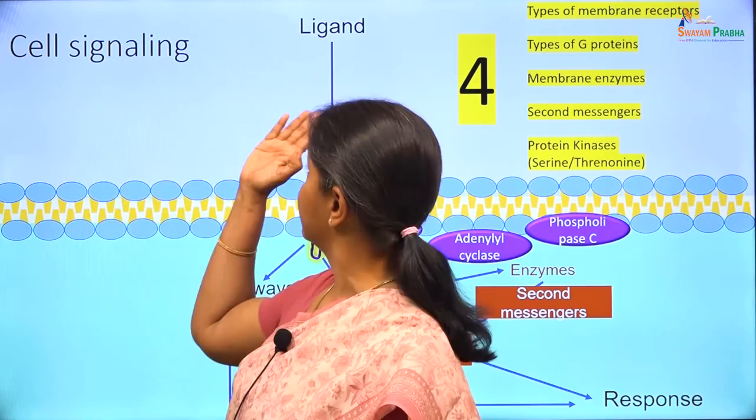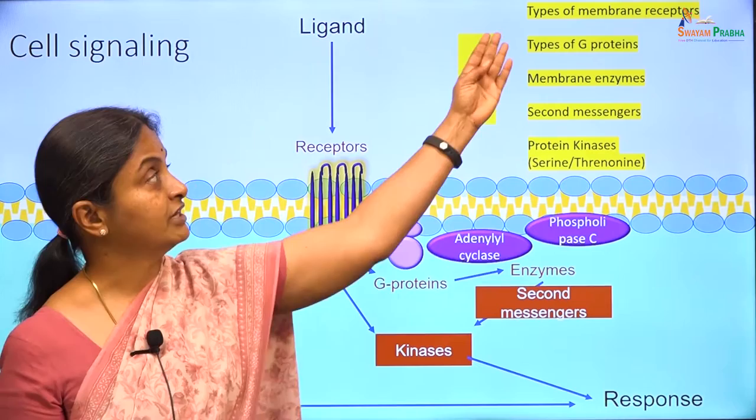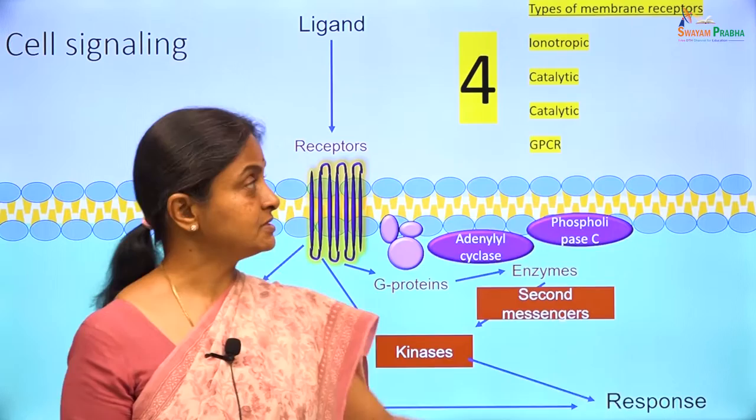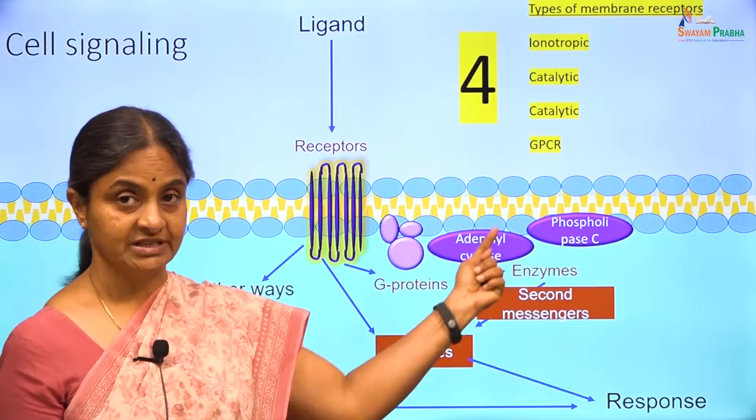Other pathways also exist, including ligands binding to cytoplasmic receptors and producing a response. We will now look at 4 types of membrane receptors, which can be classified as ionotropic, 2 sets of catalytic receptors, and G-protein coupled receptors.